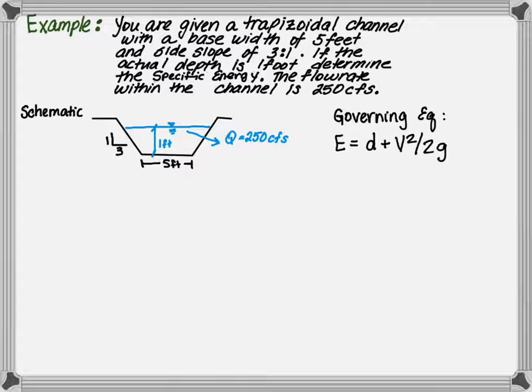Now let's look at the same example, where we have a base width of 5 feet, side slopes of 3 to 1, a flow depth of 1, and a flow rate of 250 CFS. This time, we want to determine the specific energy. The specific energy is the depth plus velocity squared over 2g.